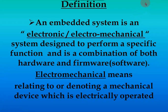In the definition, two important points are combined. The physical structure of an embedded system is described as an electronic or electromechanical system designed to perform a specific function. Electromechanical means it relates to a mechanical device that is electrically operated. It is also a combination of hardware and firmware. Firmware is essentially software, but in embedded systems the technical term used is firmware — you will see this word throughout embedded systems rather than software.